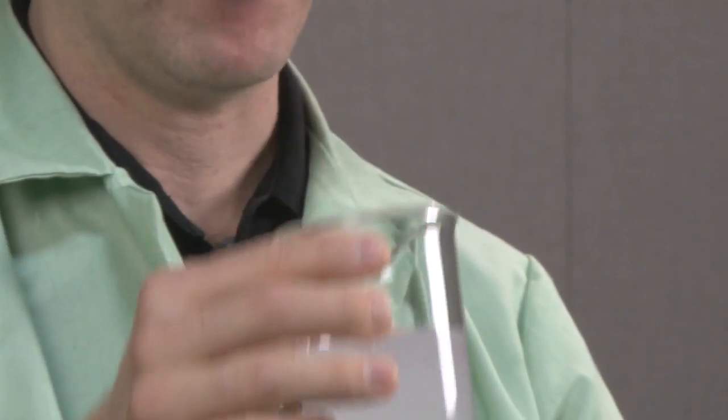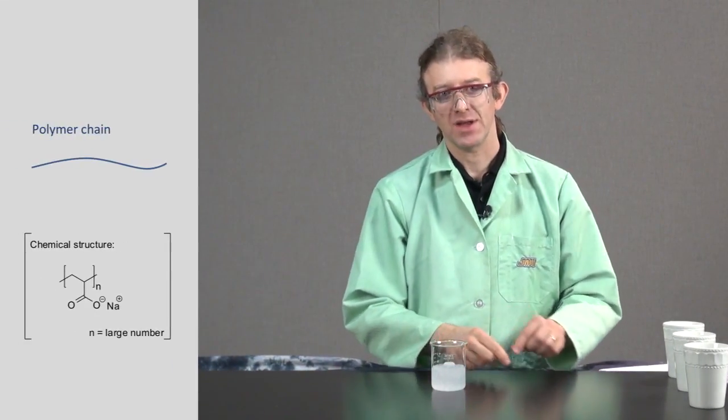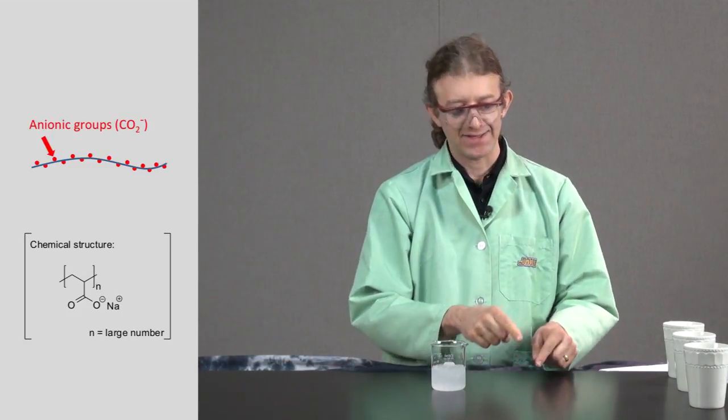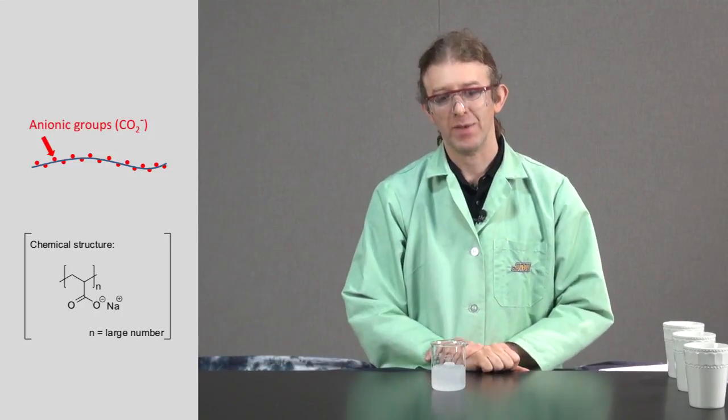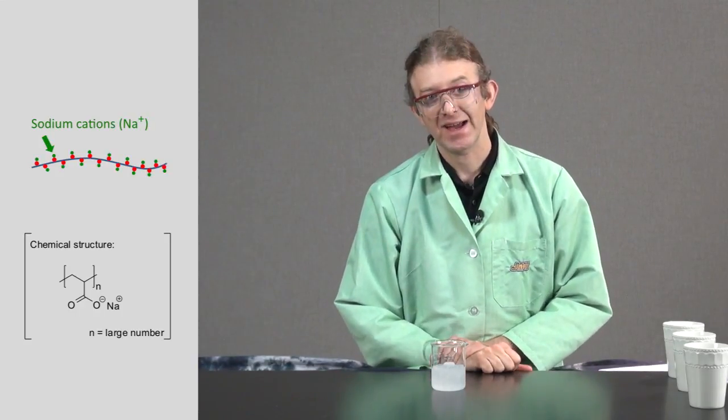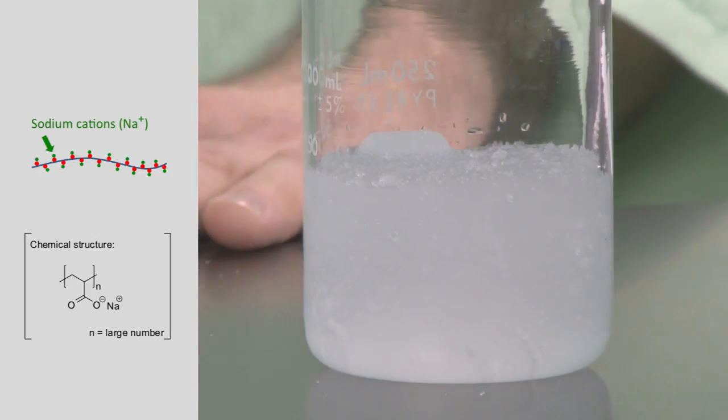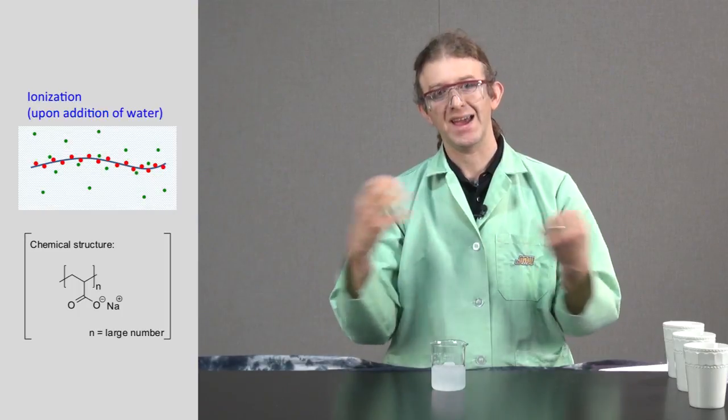So the way this works is that polymer, a polymer is a long chain of atoms. And this particular polymer has negative charges, anionic charges, regularly spaced along this polymer. Each of those anionic charges has a sodium cation associated with it. And when I add the water, the sodium cation and the anionic polymer separate from each other, they ionize.